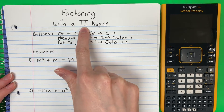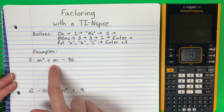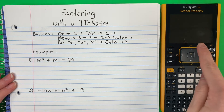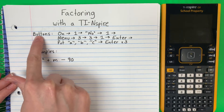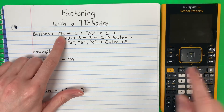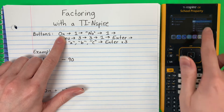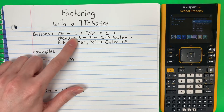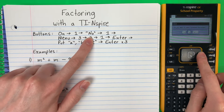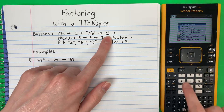Factoring with a TI-Nspire. We're going to go ahead and factor these trinomials using only the calculator. Here are the buttons. So first we're going to push On to turn it on. You will be in the home page. Now we're going to push 1 to enter a new document, then 1 again. I want the calculator.